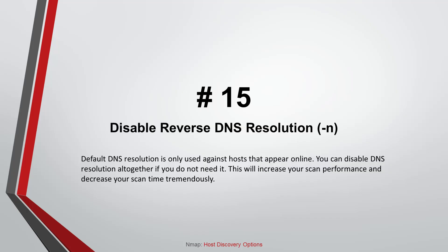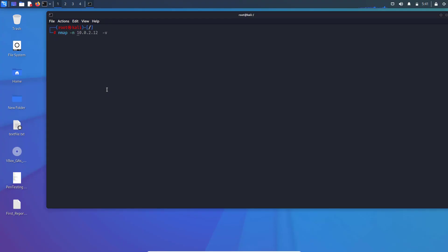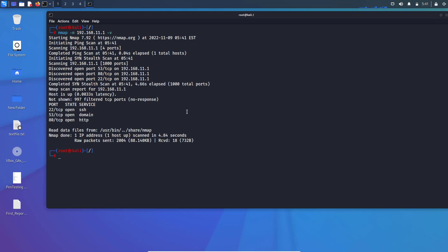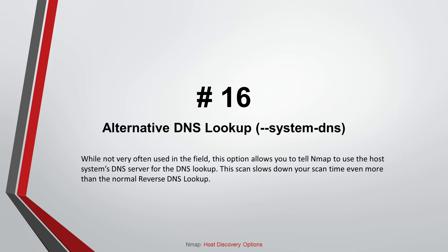Command number fifteen: Default DNS resolution is only used against hosts that appear online. You can disable DNS resolution altogether if you do not need it — this will increase your scan performance and decrease your scan time tremendously. Command number sixteen: Alternative DNS Lookup. While not very often used in the field, this option allows you to tell Nmap to use the host system's DNS server for the DNS lookup. This scan slows down your scan time even more than normal reverse DNS lookup.